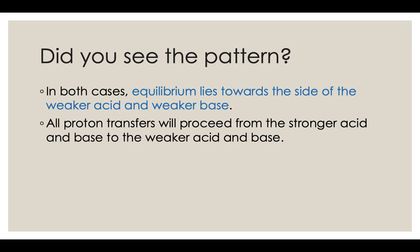With equilibrium reactions, we draw arrows pointing both ways. You would draw the larger arrow pointing towards the weaker acid and base, and that arrow would be bigger than the arrow pointing toward the stronger acid or base. Proton transfers always go from the strong acid — the one that donates protons really well — to the weaker acid and base side.